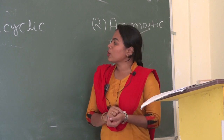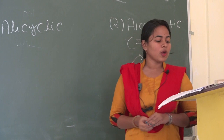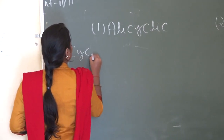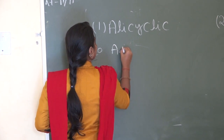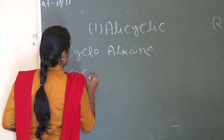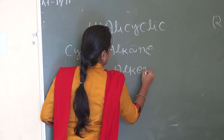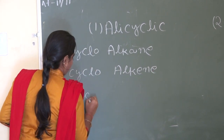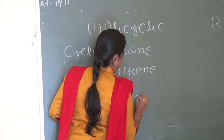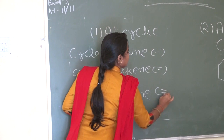Alicyclic has three categories: cycloalkane, cycloalkene, and cycloalkyne — corresponding to single, double, and triple bonds respectively.